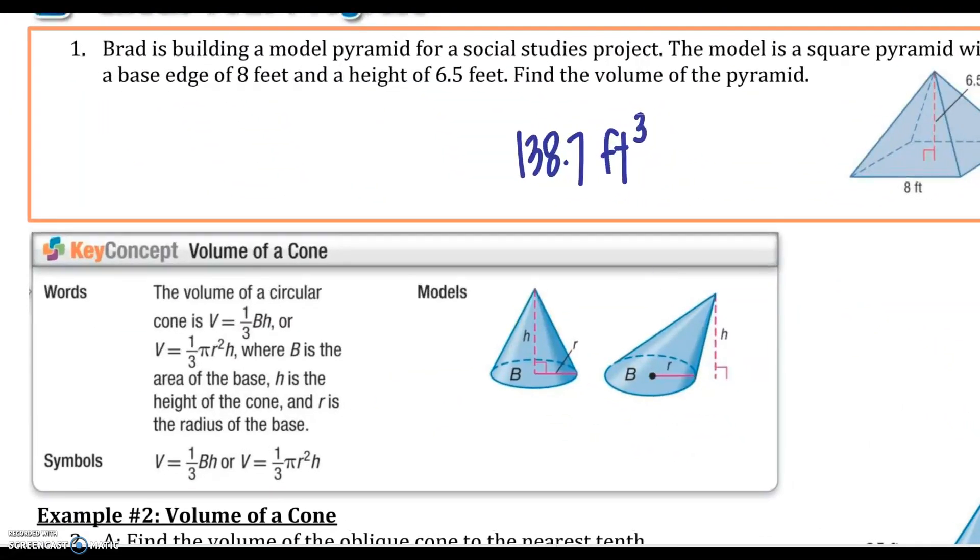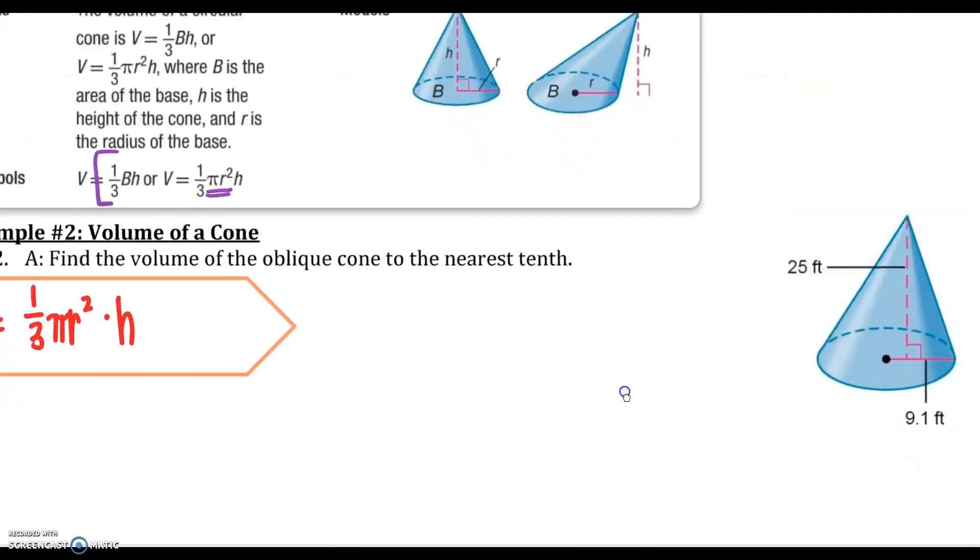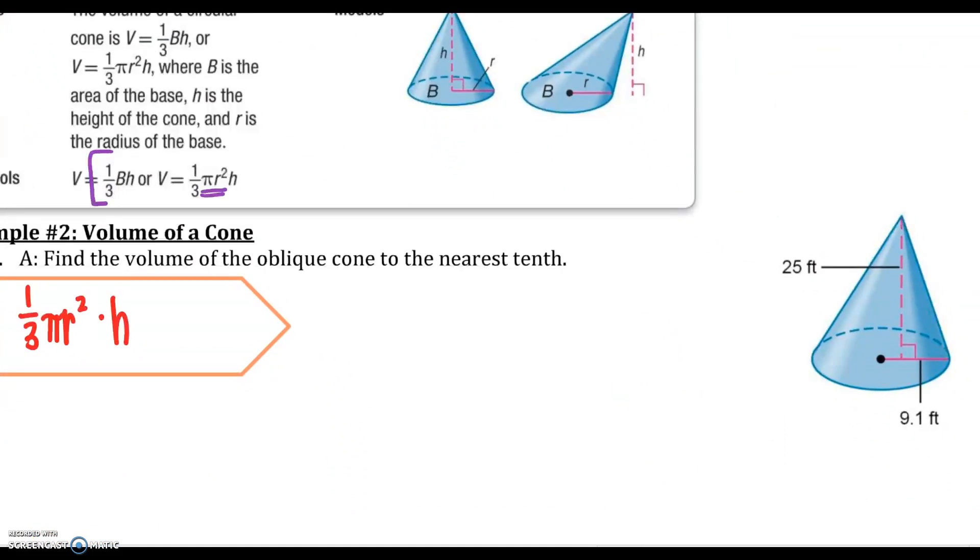Volume of a cone. Exact same formula, notice, but now we're just putting pi r squared times your height. This can be for oblique or right. 1 third your big B times your height or 1 third pi r squared times your height. Notice this from your vertex, it goes perpendicular to your base, but it doesn't go to the center. This would be considered an oblique cone. Just a little side note.